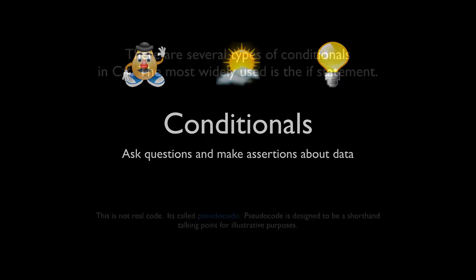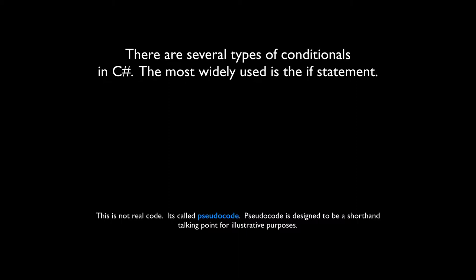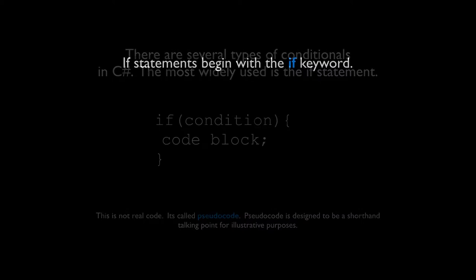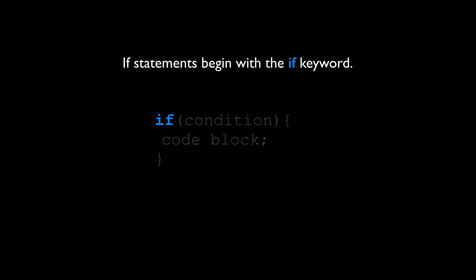In C# there are several different kinds of conditionals and we'll talk about all of them in this lecture, but the most widely used and most readily recognized is the if statement. I'm using pseudocode in this example — this isn't real code that will compile, it's just designed to be simple and easy to read. The if statement begins with the if keyword and you can tell it's a built-in function because it has parentheses following it.